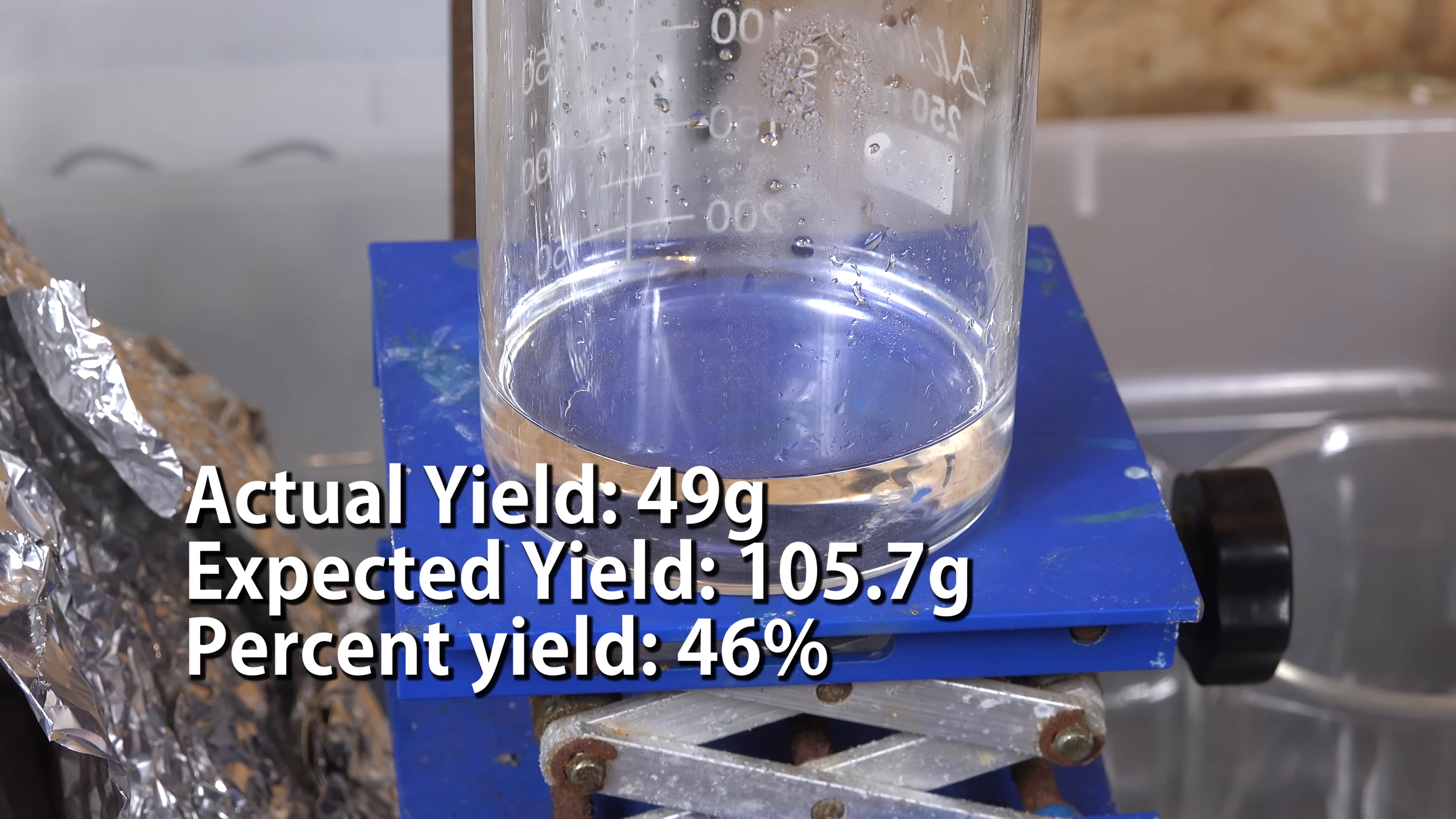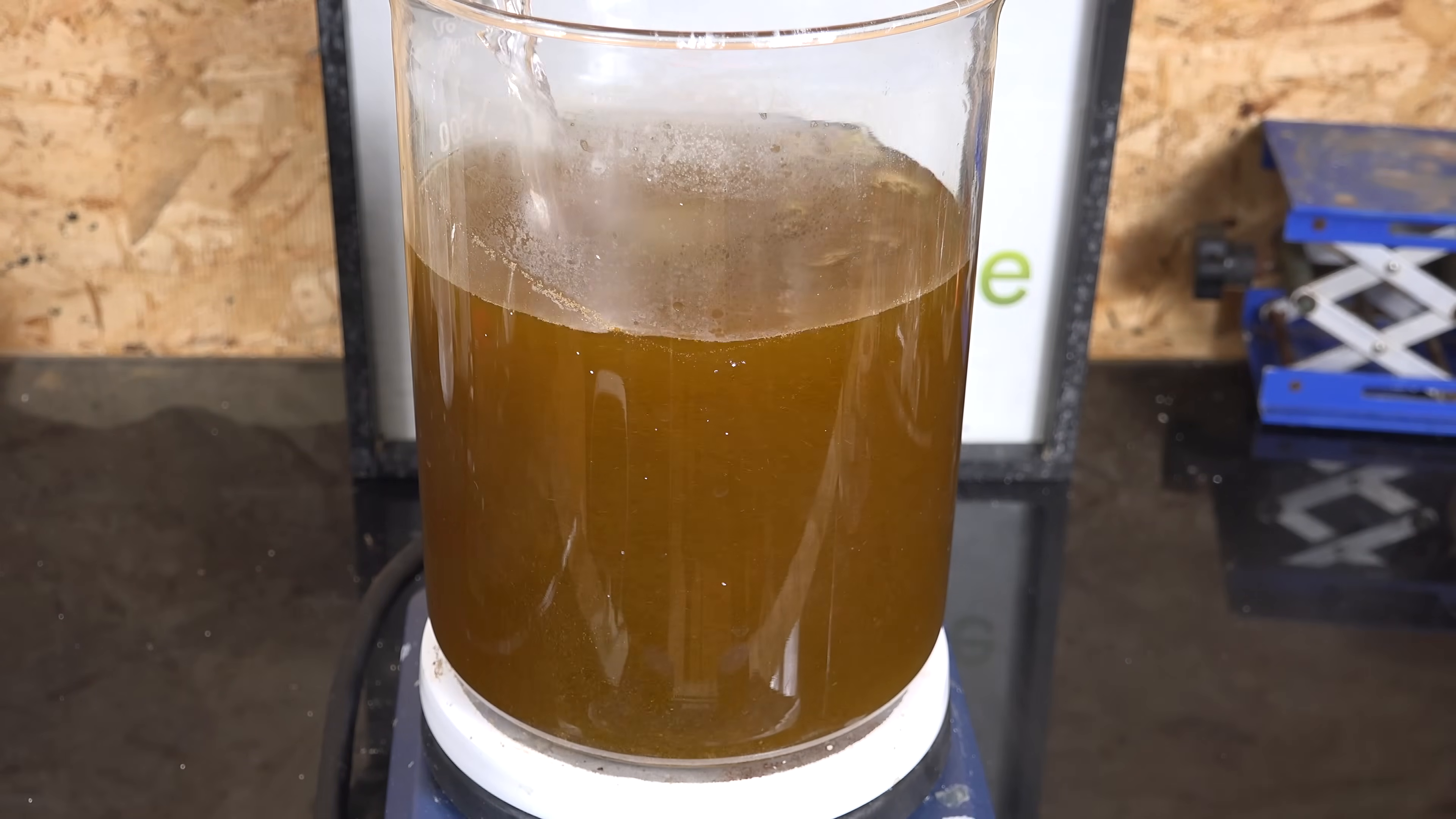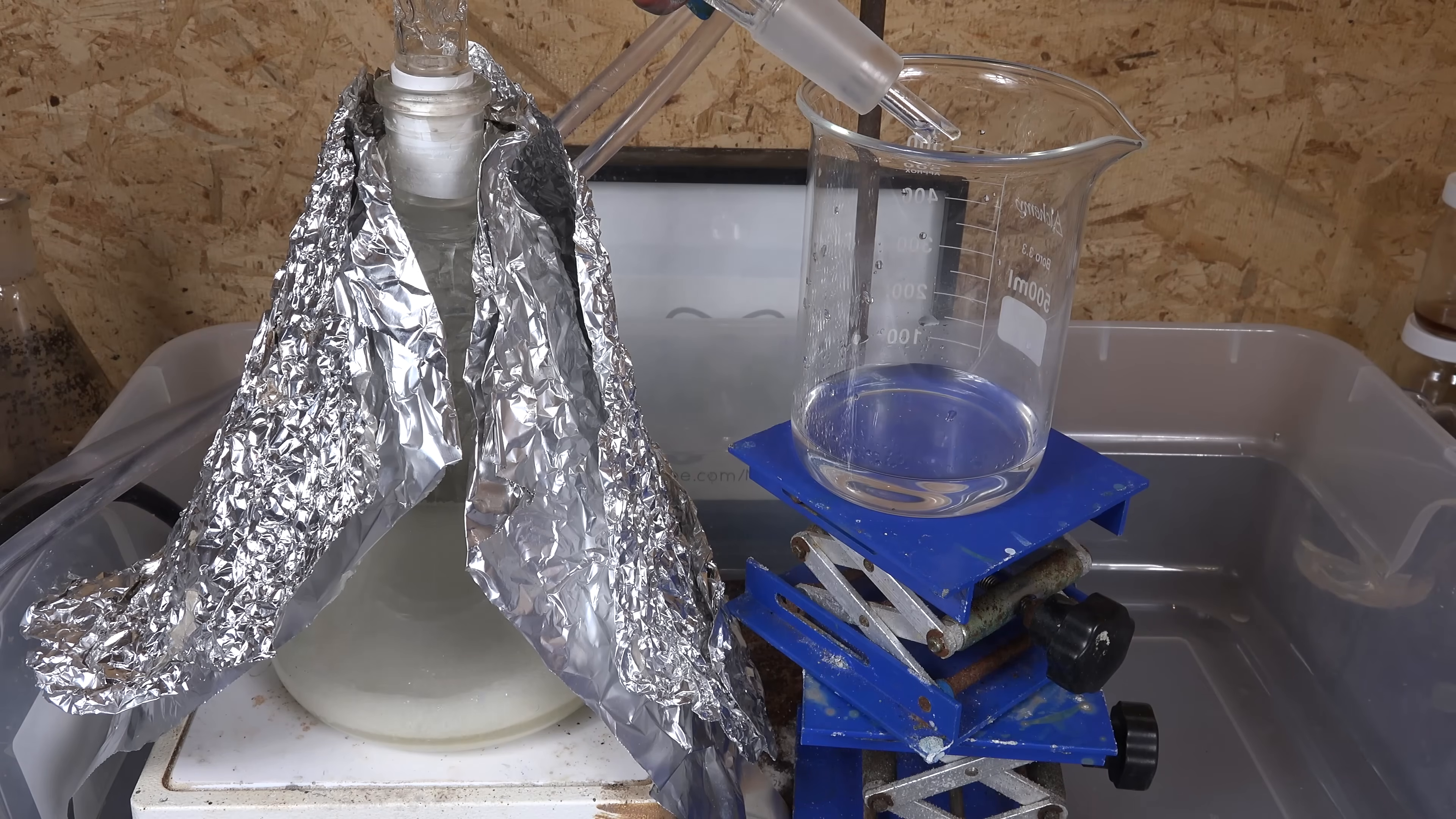The expected yield was about 105.7g, so our yield was 46%. So the yield isn't terrible, but considering we had to process 450g worth of chemicals just to get a tiny amount of acid, I don't think it's viable overall. But I'll leave that choice up to you.